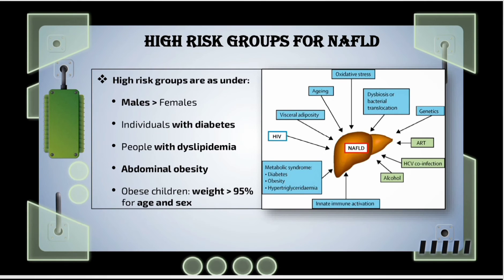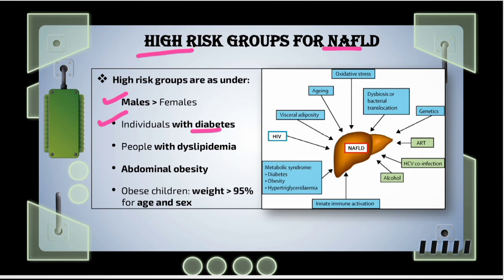Now let's see who can be the high-risk groups for the development of NAFLD. NAFLD can develop more in males compared to females, in individuals with diabetes, individuals with dyslipidemia, those with higher abdominal obesity, and obese children whose weight is more than the 95th percentile for their age and sex. Apart from that, there are various other risk factors shown in this diagram.